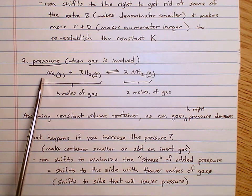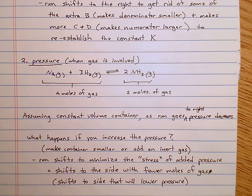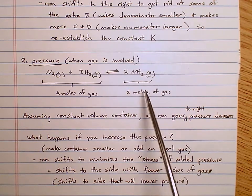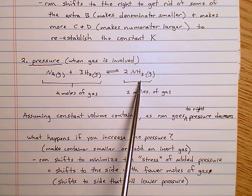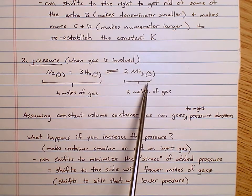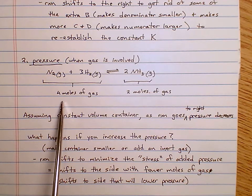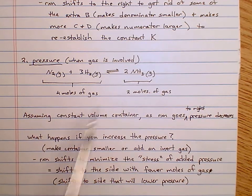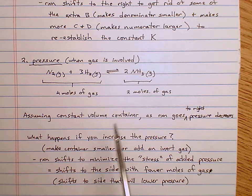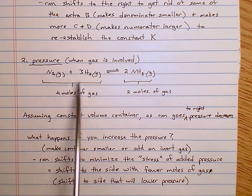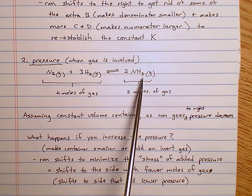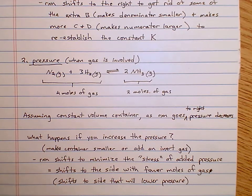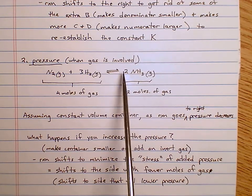Looking at the reactants, we have 1 mole of gas plus 3 moles of gas — that's 4 moles of gas on the reactant side. On the product side we only have 2 moles of gas. By this reaction forming products, we go to lower pressure, because in the same volume container, 4 moles of gas has twice the pressure of 2 moles. Nature likes lower pressure, so nature wants this reaction to go to the right to make fewer moles of gas.